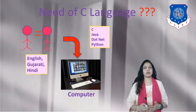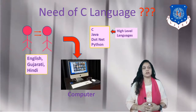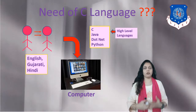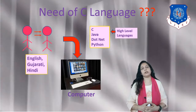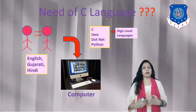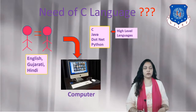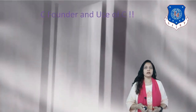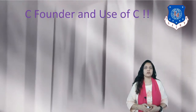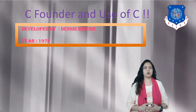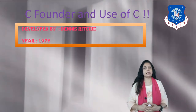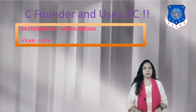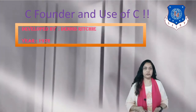C, Java, and .NET are all higher level languages. In short, if a programmer wants to communicate with a computer, we require a programming language, and we are going to learn C language for this. C was developed by Dennis Ritchie in the year 1972. It is a very old language and still popular in recent times.